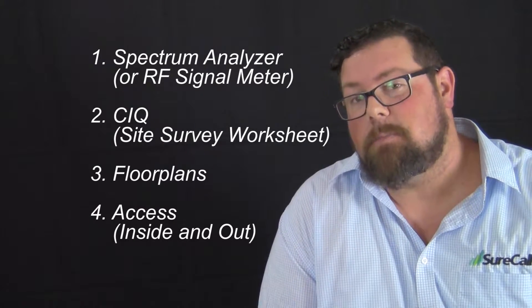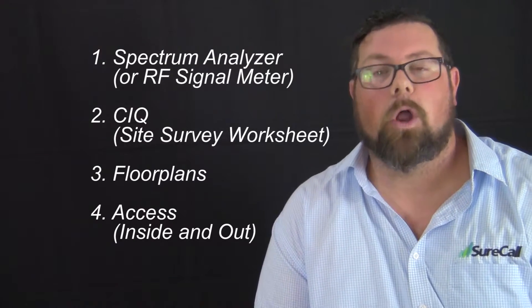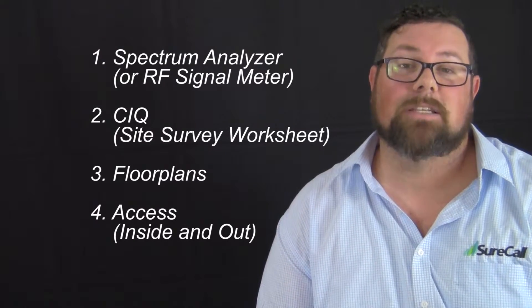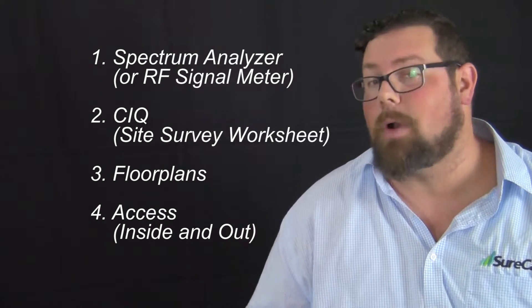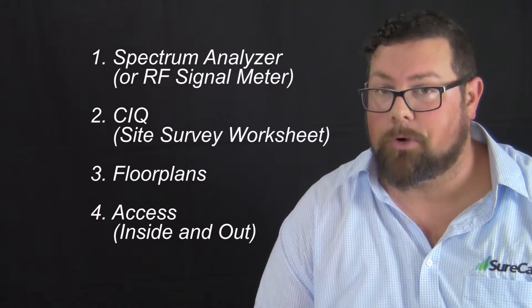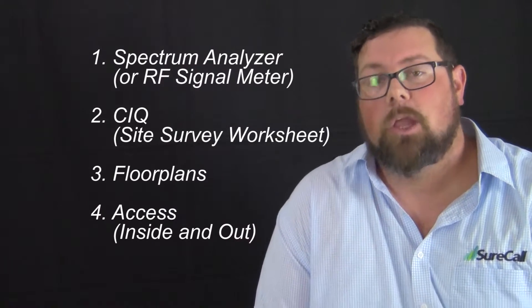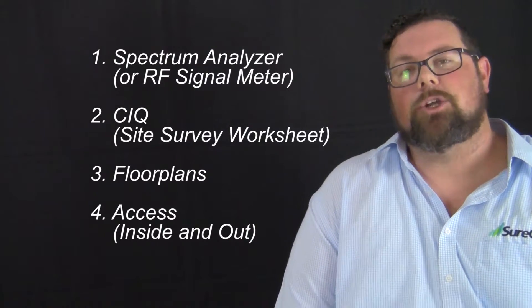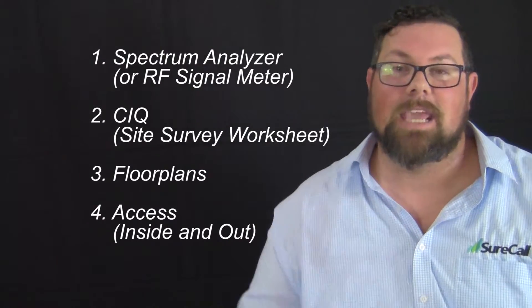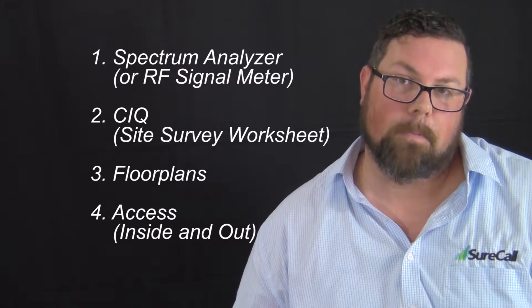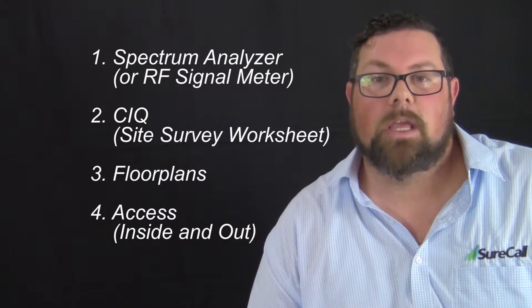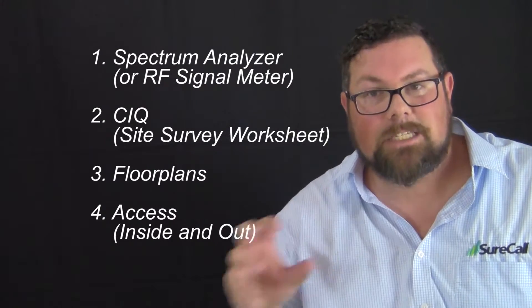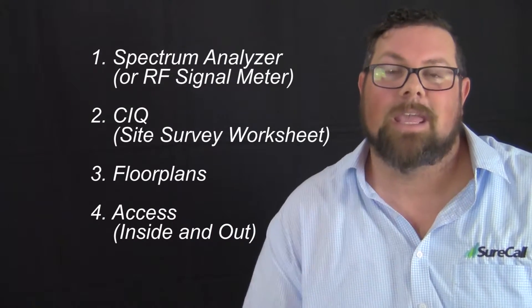The last thing you'll need is access. You're going to want to make sure that you have access to the perimeter of the building, access to the roof where you're expecting to put your outside donor antenna, and access to the interior of the building so that you can get signal readings for those dead spots that you're finding inside.